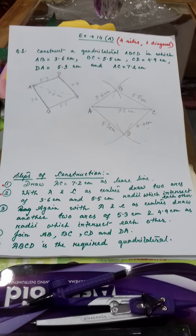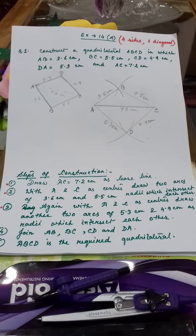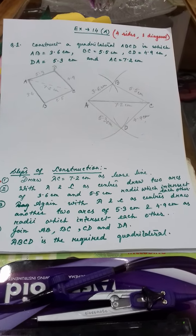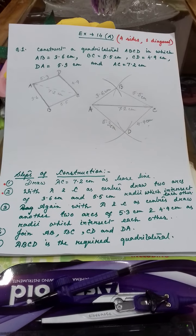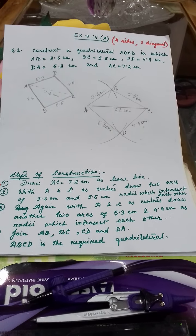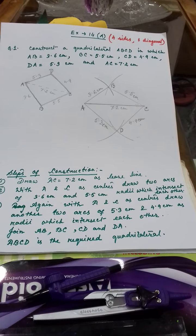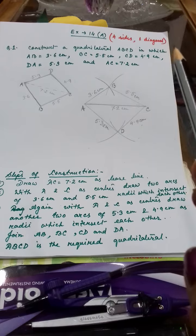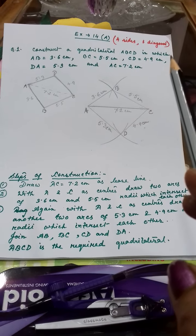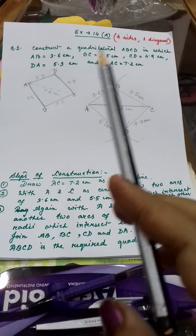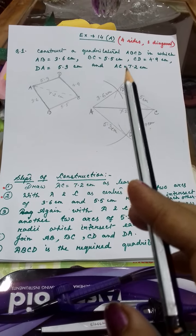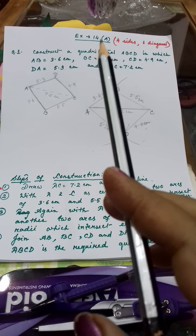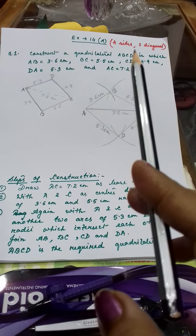Let's start with the first exercise. In your textbook, the first exercise is based on four sides and one diagonal element — that means you have to construct a quadrilateral with these elements. Here is the question: construct a quadrilateral ABCD in which AB is equal to 3.6 cm, BC = 5.5 cm, CD = 4.9 cm.